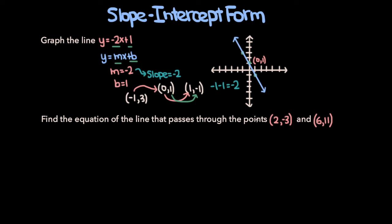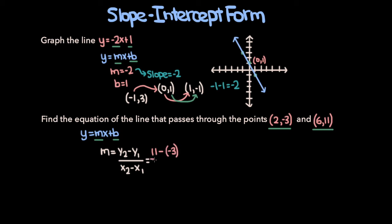Now let's move on to the next problem: find the equation of the line that passes through the points (2, −3) and (6, 11). We'll find the line in slope-intercept form, y equals mx plus b, so we need m and b. Start by finding the slope: m equals y2 minus y1 over x2 minus x1, which is 11 minus negative 3 over 6 minus 2 — that's 14 over 4, which simplifies to 7 over 2. So the equation is y equals 7/2 x plus b.